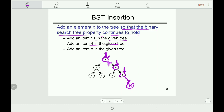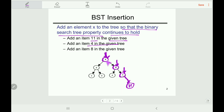Now let's insert another item: 4. Compare with the root — 4 is equal to the root value 4. By the BST property, equal or greater values go to the right subtree, so we move right. We get 6; since 4 is less than 6, we move left. We compare with 5 — 4 is less than 5, so we insert 4 here.